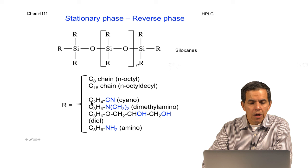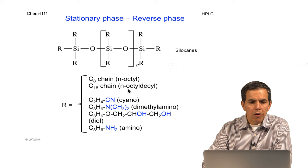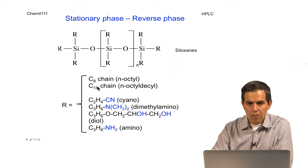Each of these different R groups will have the ability to partition compounds differently. For reverse phase and for more hydrophobic compounds, the C18 column, or C18 reverse phase, is the preferred one.